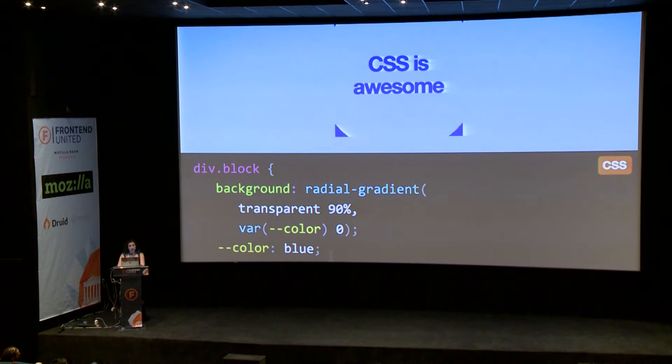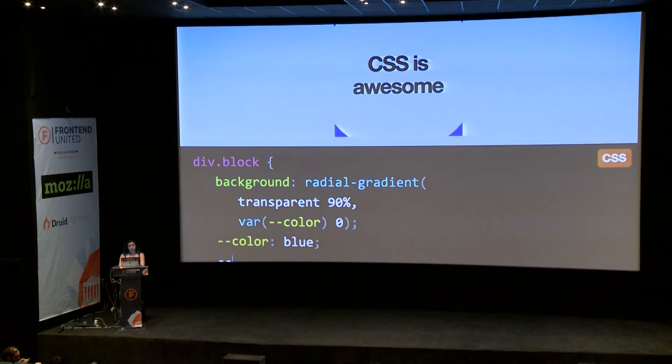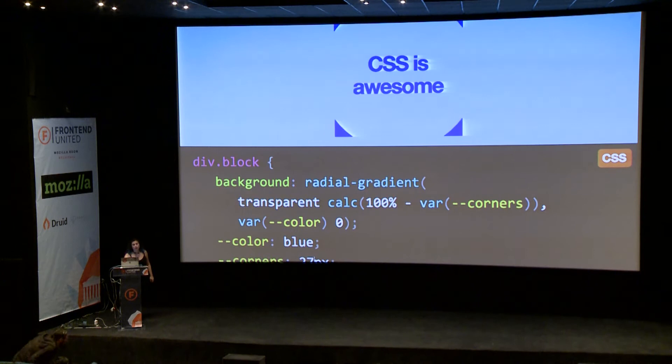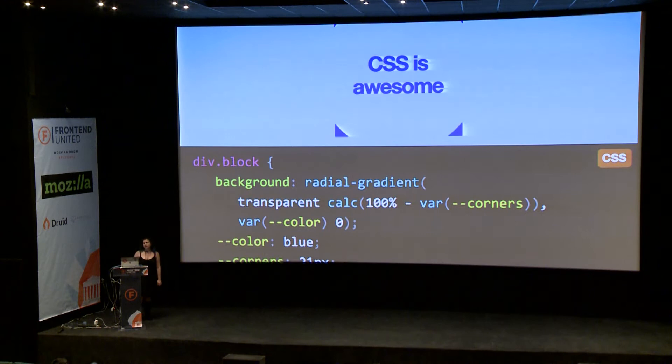But they're not just limited to colors. I can define my own property about the size of the corners, for instance. Let's call it corners and give it 15 pixels. I can go here and replace this arbitrary 90% with 100% minus the value of the corners property. And now I can just modify the corners property and it changes the size of this effect. At this point you might still not be convinced — why do I need these CSS variables? I have Sass. Sass can do all this.